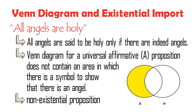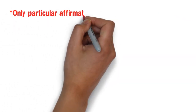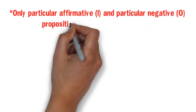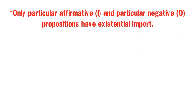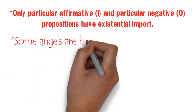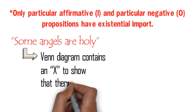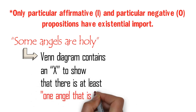As we can see, both the application of traditional rules and the use of the Venn Diagram presuppose that only Particular Affirmative I and Particular Negative O propositions have existential import. Thus, a Venn Diagram for the Particular Affirmative I proposition 'some angels are holy' contains an X to show that there is at least one angel that is holy. And this is how the Venn Diagram looks like.